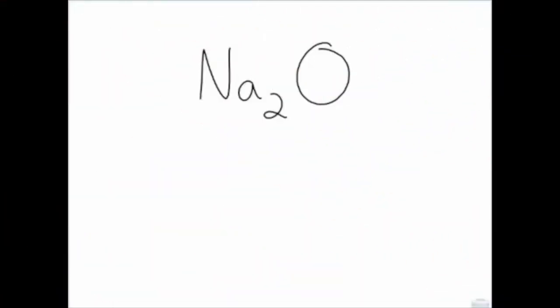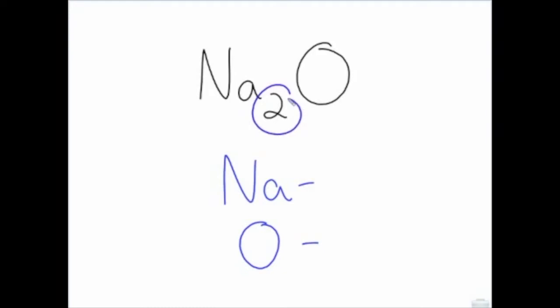Let's try another example: sodium oxide. First, list the elements — sodium and oxygen. The subscript two means there are two sodiums. There is no subscript for oxygen, which means there is just one.